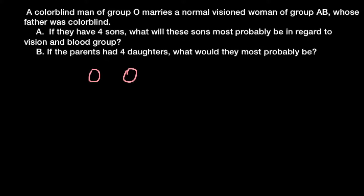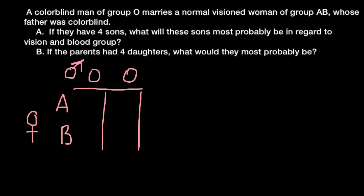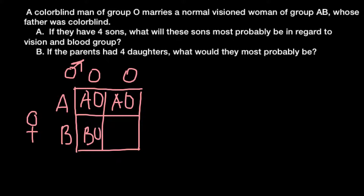Blood group AB is made by only one genotype, that is A and B. So we are building a Punnett square with the female on one side and the male on the other. As you can see, all the progeny will belong to one of two blood groups: blood group A or blood group B.